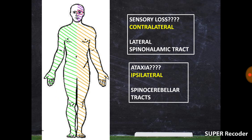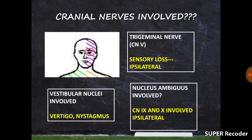The cerebellar peduncle involvement means the spinocerebellar tract is also affected. Recall that the spinocerebellar tracts do not decussate — they ascend on the same side. Therefore, spinocerebellar tract involvement causes ipsilateral ataxia: if there is a lesion on the left side, the ataxia will also be on the left side.